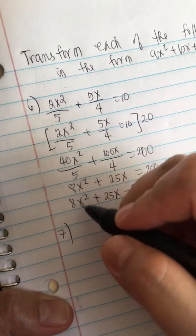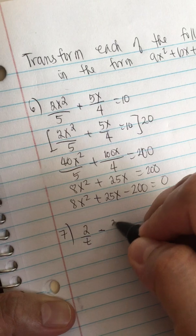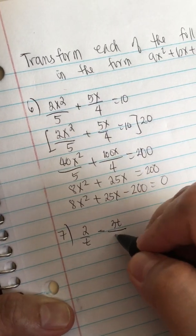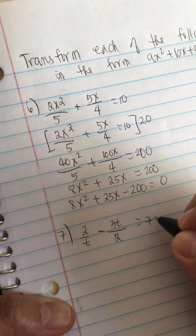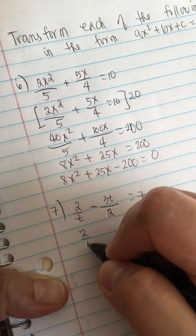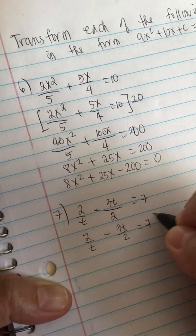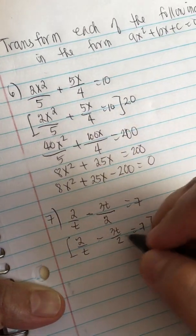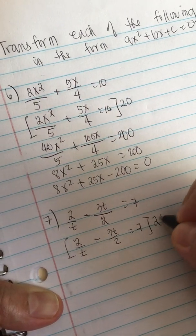Number 7: 2t minus 3t over 2 equals 7. We do the same thing. We multiply the entire equation by this denominator, so we have 2t.